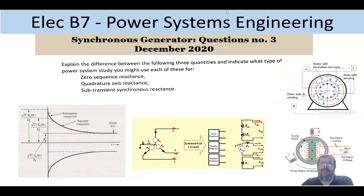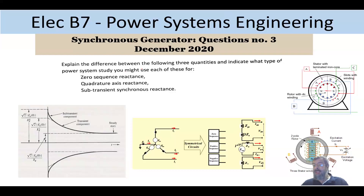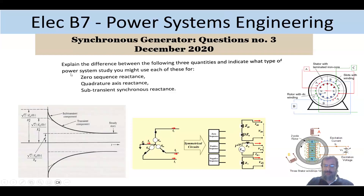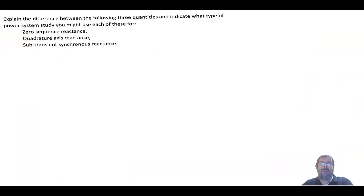Hi everyone and welcome back to this series on Electrical B7 Power Systems Engineering PE exam. This time we will go through some theoretical questions about synchronous generators. This was part of one of the questions solved last time — question number two — which had numerical parts followed by this theoretical question. The question asks us to explain the difference between three quantities.